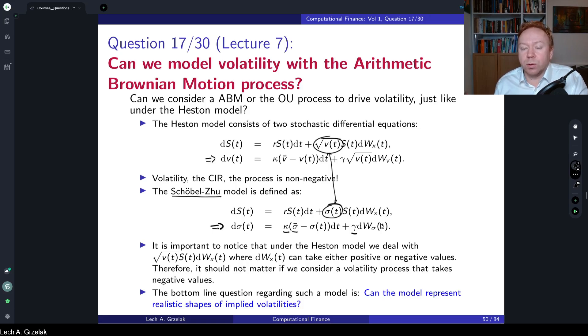In the Black-Scholes model, we have dS equals rS dt plus sigma S dW. In Black-Scholes case, we would have sigma to be constant. However, if we look here, sigma is multiplied by S. So we can remove S here and divide by S, and what we will see is that sigma is multiplied by Brownian motion. Brownian motion can take negative and positive values.